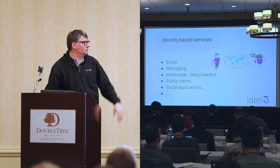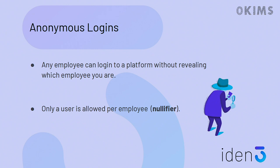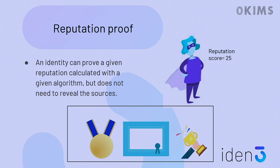Just to finish the main presentation, let me mention some use cases of zero knowledge applied to identity. One is anonymous voting. Another is anonymous login — for example, logging into a congress website without revealing who you are, where the only condition is that you have bought a ticket. Another is reputation proof: sometimes you have a score or reputation but you don't want to reveal which claims gave you that reputation.